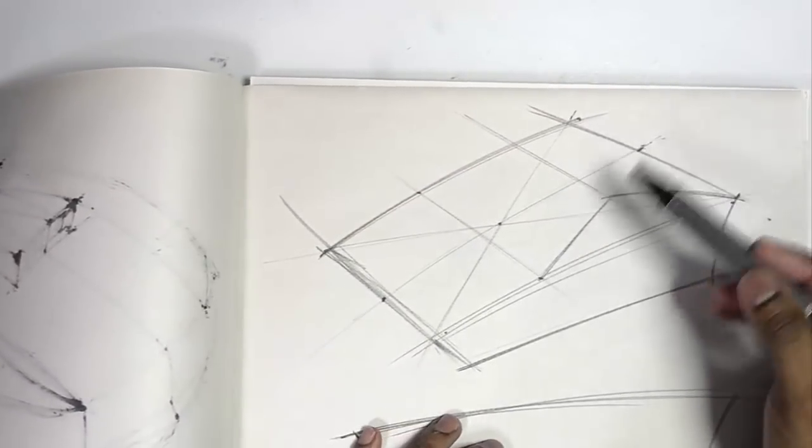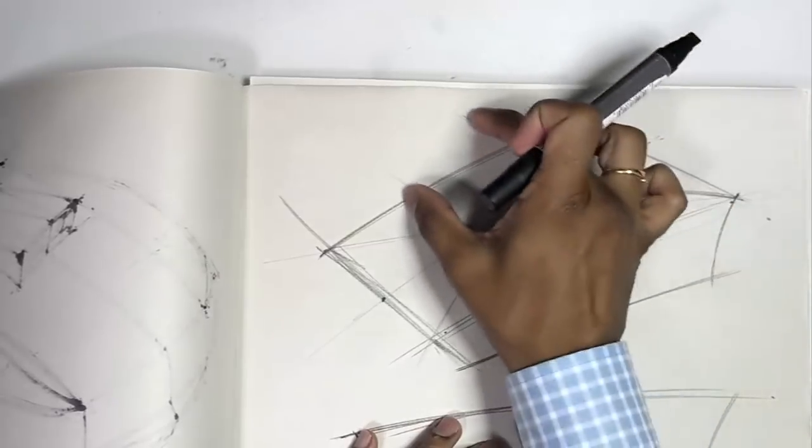This line back into perspective. Again, we're just building shapes. So this is transferring over to here.